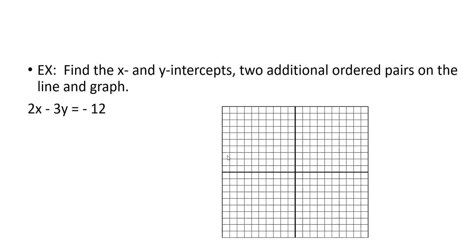This question says find the x and y intercept and a couple of additional ordered pairs and graph them. Let's start with what happens when x is 0. When x is 0, we're left with -3y. Don't lose that negative sign. -3y equals -12. Divide both sides by -3, and we end up with y equals 4. So (0, 4) is my first intercept. What happens when the y value is 0? When the y value is 0, I get 2x equals -12 or x equals -6. So (-6, 0) is another one.